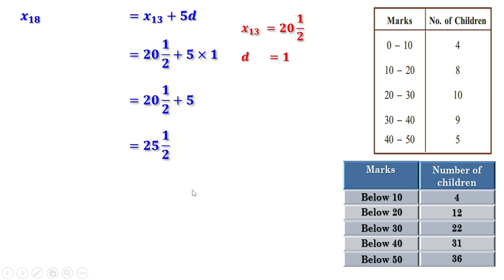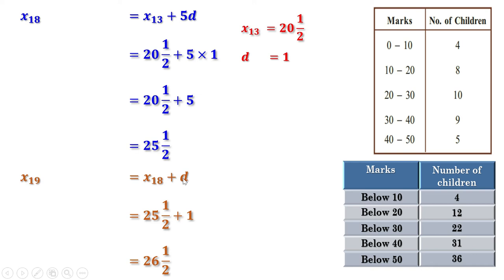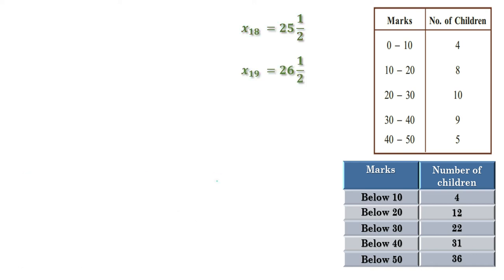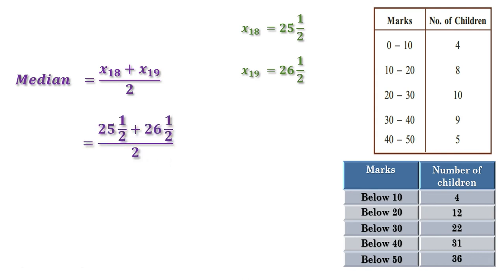Now let us find the 19th term. The 19th term is the 18th term plus common difference. The 18th term is 25 and a half and common difference is 1. So the 19th term is 25 and a half plus 1, equal to 26 and a half. We now have the two middle terms. Median is half the sum: 18th term plus 19th term divided by 2. That is 25 and a half plus 26 and a half divided by 2. Half plus half is 1; 25 plus 1 is 26; 26 plus 26 divided by 2 is 26. That means the median is 26.